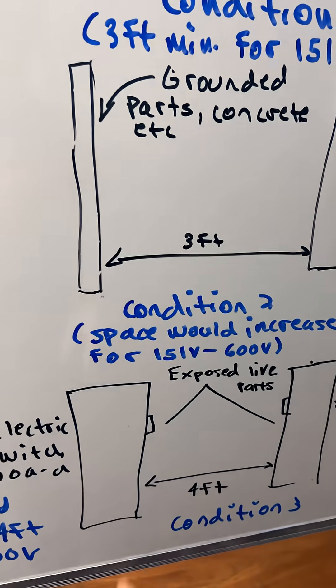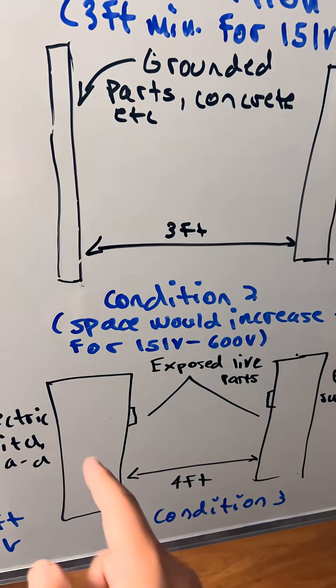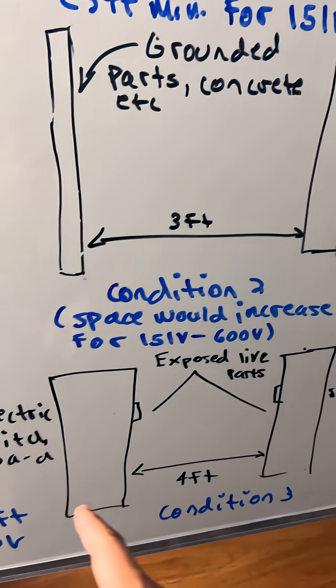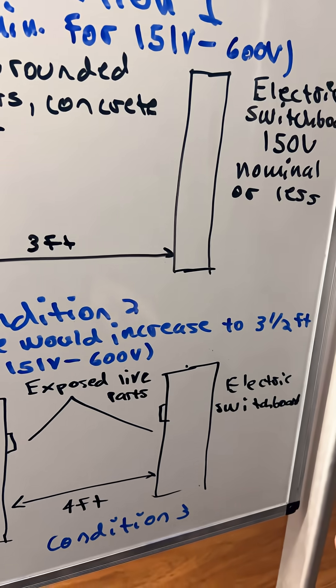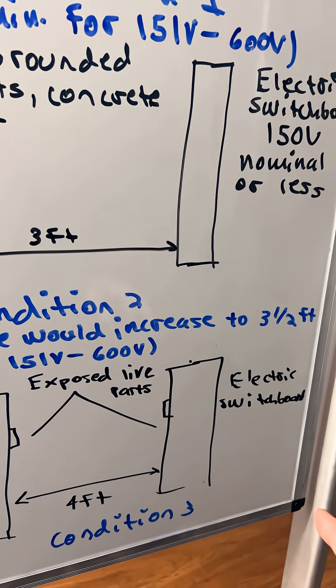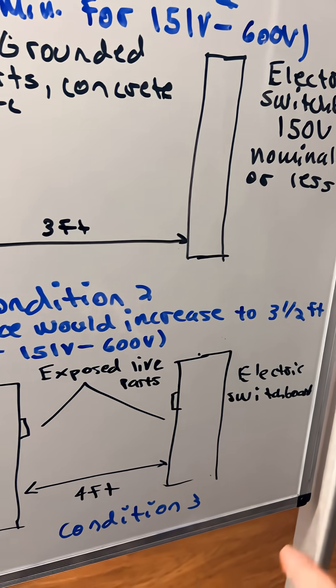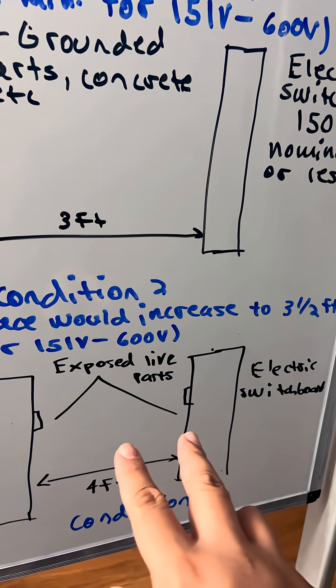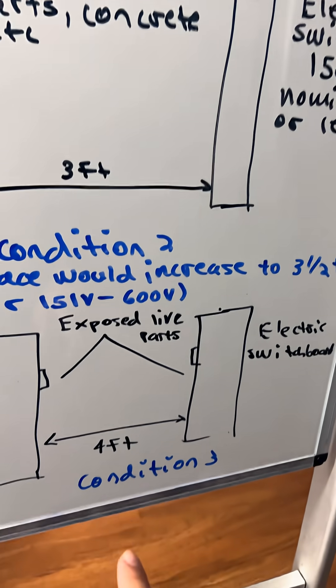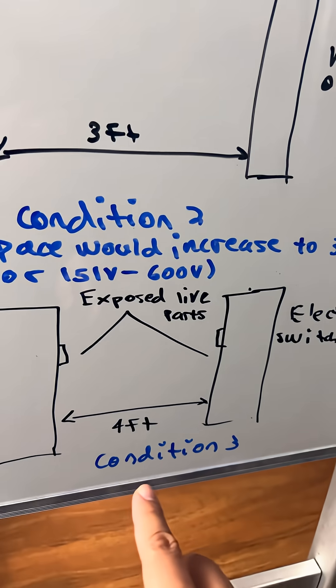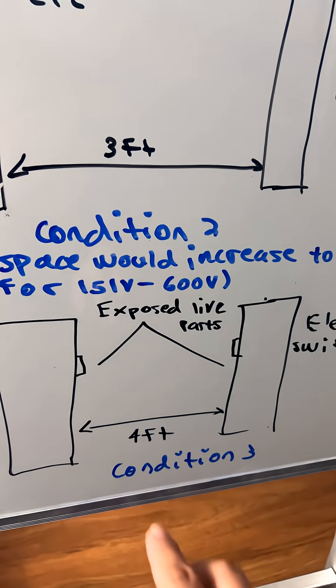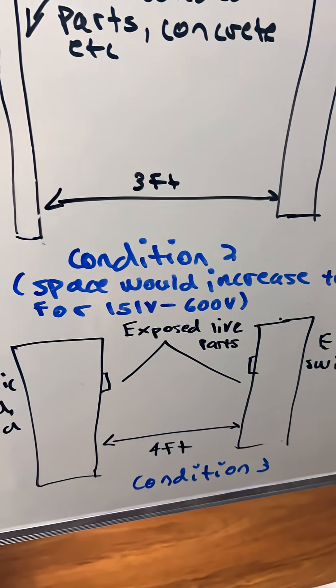And on the other side we have the electrical switchboard for 150 volts. So if it's exposed live parts on both sides, it has to be 4 feet in between — that's condition 3.